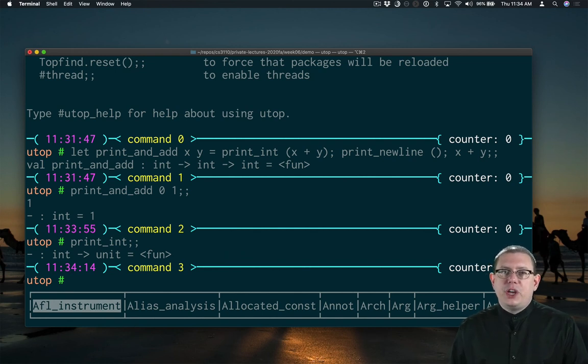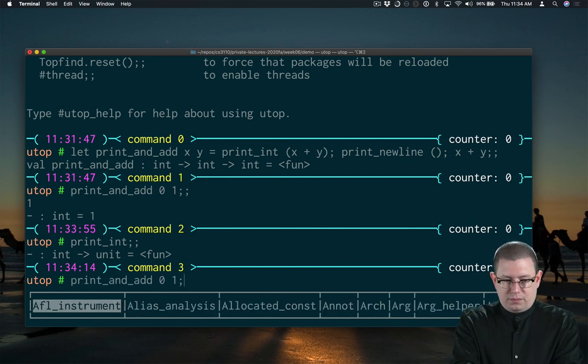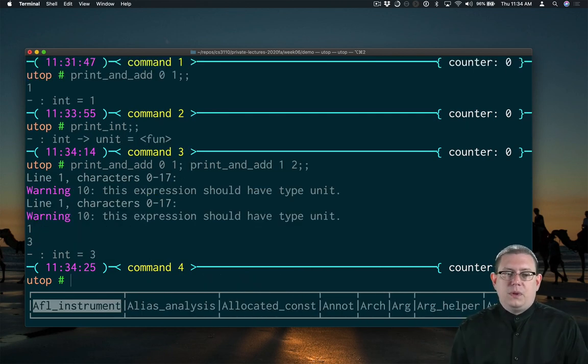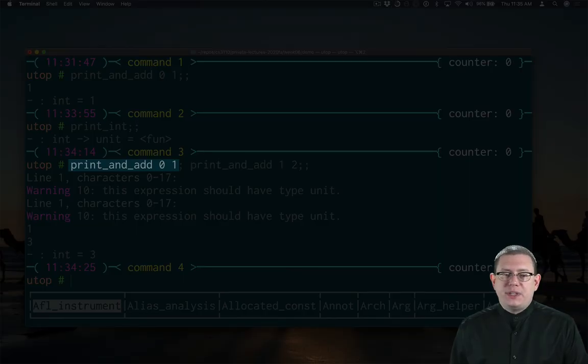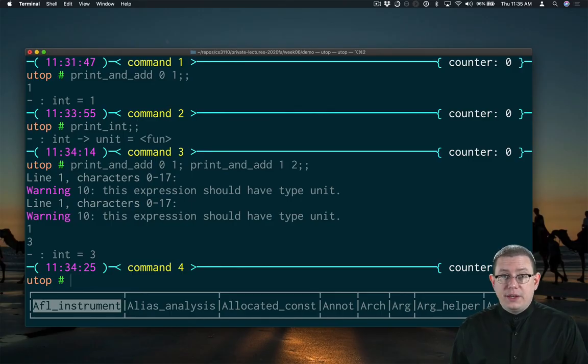But if I wanted to chain together print_and_add with semicolon, I might get a warning. You can see the warning comes back. This expression should have type unit. What OCaml is complaining about is that the value produced by print_and_add 0, 1, which is 1, is simply being thrown away because it's part of this chain of expressions in the semicolon.